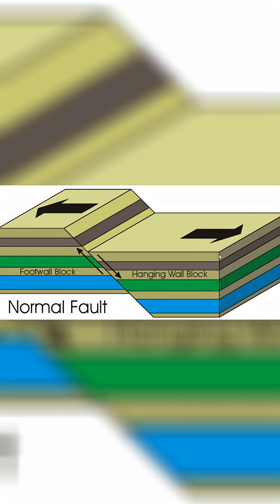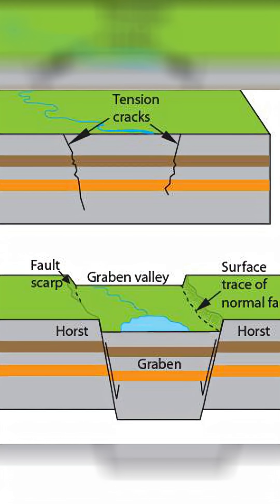The process of normal faulting is created in an extensional environment. What this means is that the crust is being stretched outwards, and this extending of the crust eventually breaks through weaknesses in the rock and creates a normal fault.